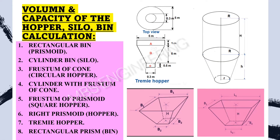Point number 1: Rectangular bin or prismoid volume and capacity calculation. Point number 2: Cylinder bin or silo volume and capacity calculation. Point number 3: Frustum of cone or circular hopper volume and capacity calculation. Point number 4: Cylinder with frustum of cone volume and capacity calculation. Point number 5: Frustum of prismoid or square hopper volume and capacity calculation. Point number 6: Right prismoid or hopper volume and capacity calculation. Point number 7: Tremi hopper volume and capacity calculation. Point number 8: Rectangular prism or bin volume and capacity calculation.